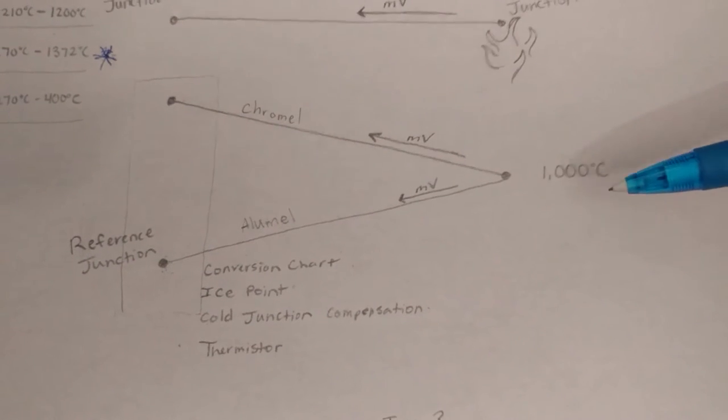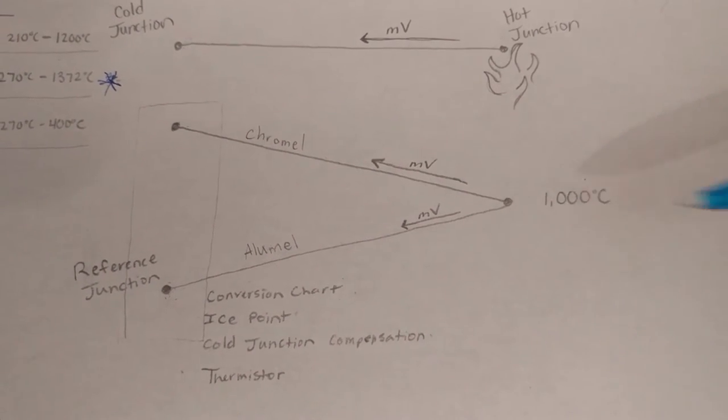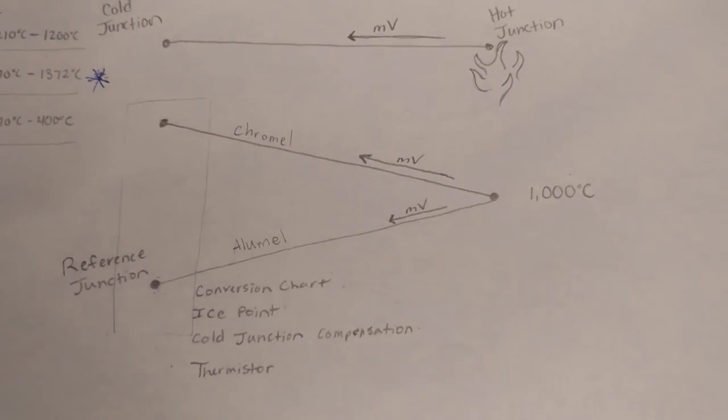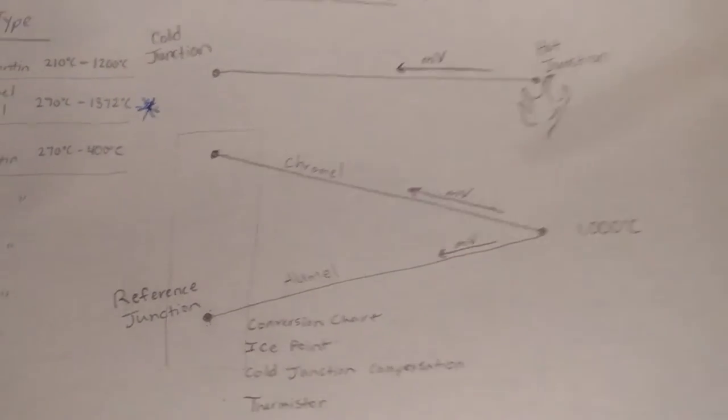Let's say we wanted to measure a small campfire. It would be around a thousand degrees Celsius. What we would do is stick one end of the probe, or the hot junction, in the fire.